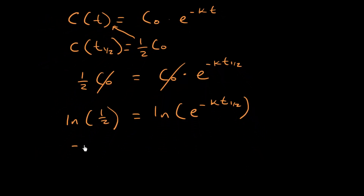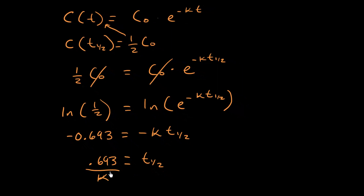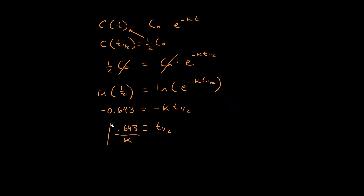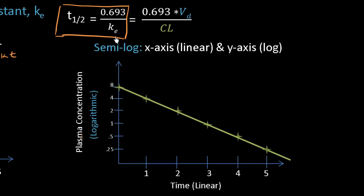The ln of one-half equals negative 0.693, and the ln of e raised to anything is just that value, so we get negative 0.693 equals negative k times t one-half. Solving for the half-life, the negatives cancel out and we get t one-half equals 0.693 over k, the first order elimination rate constant.